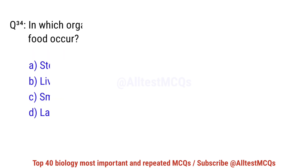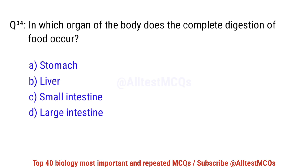Question number 34. In which organ of the body does the complete digestion of food occur? The correct option is C: Small intestine.